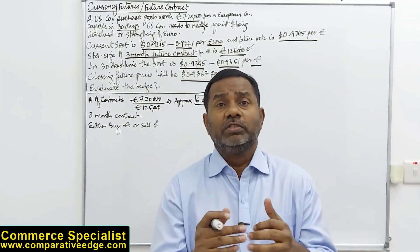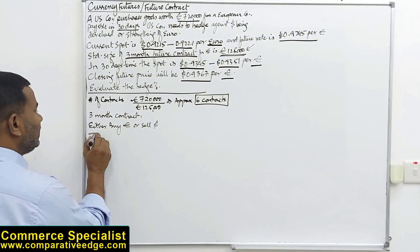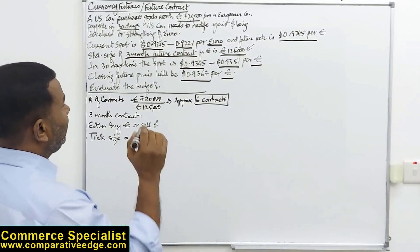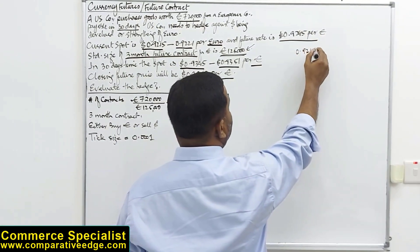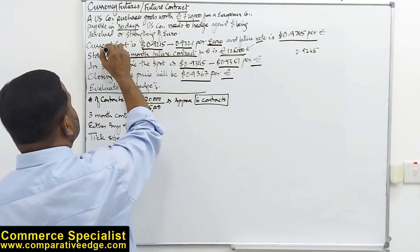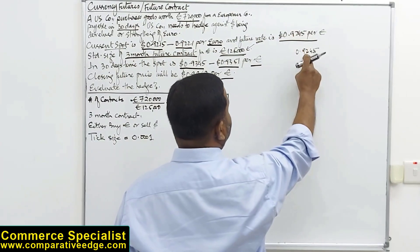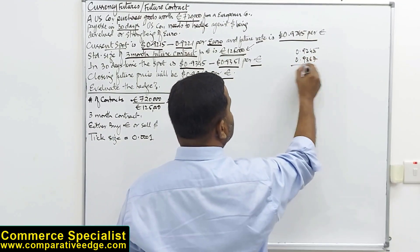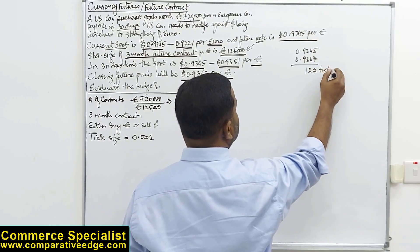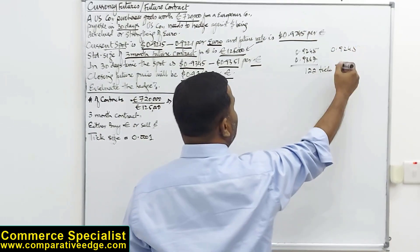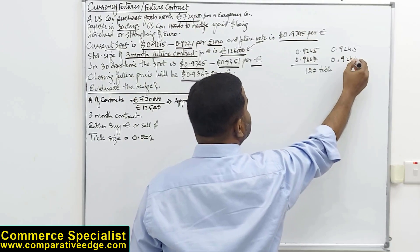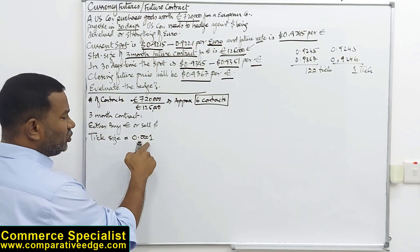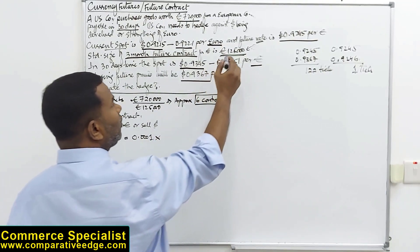The next very important thing is the tick size, which determines the profit. The tick size is generally a movement in the fourth decimal place. For example, the opening future rate is 0.9245 and at the time of closing the contract it is 0.9367 — a difference of 122 ticks. One tick is a movement in the fourth decimal place: if the rate goes from 0.9245 to 0.9246, that is one tick.